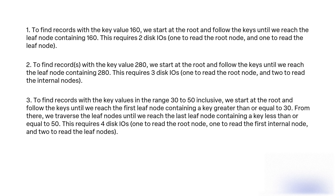Query 3: To find records with key values in the range 30 to 50 inclusive, we start at the root and follow the keys until we reach the first leaf node containing a key greater than or equal to 30. From there, we traverse the leaf nodes until we reach the last leaf node containing a key less than or equal to 50. This requires 4 disk I/Os: 1 to read the root node, 1 to read the first internal node, and 2 to read the leaf nodes.